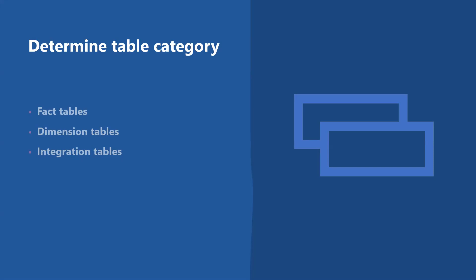What are dimension tables? Dimension tables describe business entities — things we model. Entities can include products, people, places, and concepts including time itself. The most consistent table we will find in a star schema is a date dimension table. A dimension table contains a key column that acts as a unique identifier and descriptive columns. Dimension tables contain attribute data that might change but usually changes infrequently. For example, a customer name and address are stored in a dimension table and updated only when the customer's profile changes.